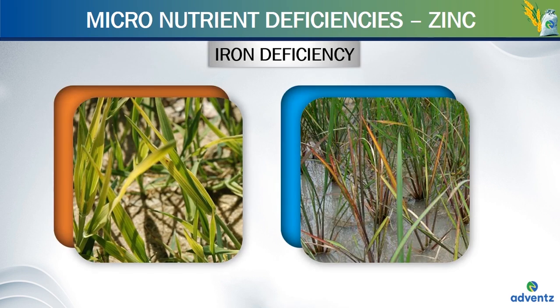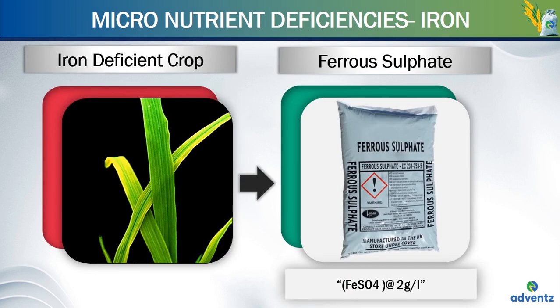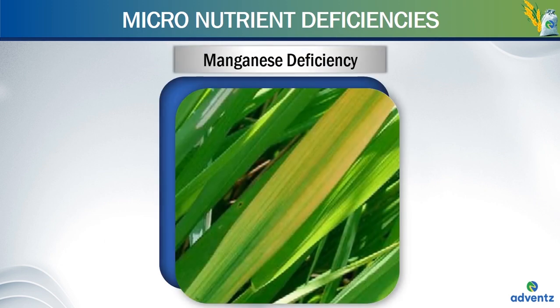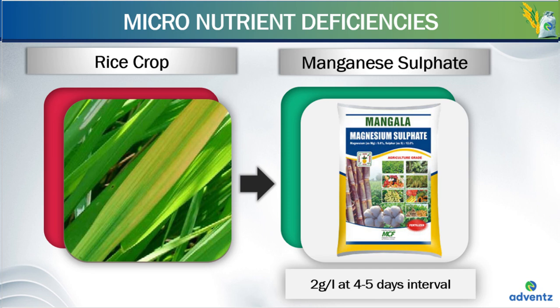The second deficiency is iron. Symptoms are chlorosis of young leaves seen by loss of green colour; interveinal portions of these leaves become chlorotic and yellowish while midribs remain green. Under severe conditions, young leaves appear bleached, yellowish leaves turn brick red, dry up and drop. To manage iron deficiency, spray the crop with ferrous sulphate at the rate of 2 grams per litre at 4 to 5 day intervals. This finishes our nutrient management in rice module.